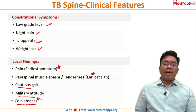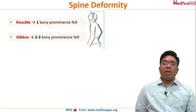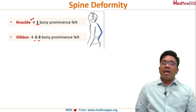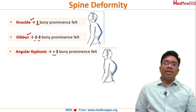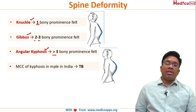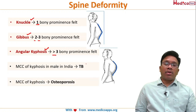Spinal deformities: a sharp deformity with only one bony prominence is called a knuckle. Two to three bony prominences is called a gibbous. Three or more bony prominences is called angular kyphosis. Important MCQ: the most common cause of kyphosis in a male in India is tuberculosis, while overall the most common cause is osteoporosis.